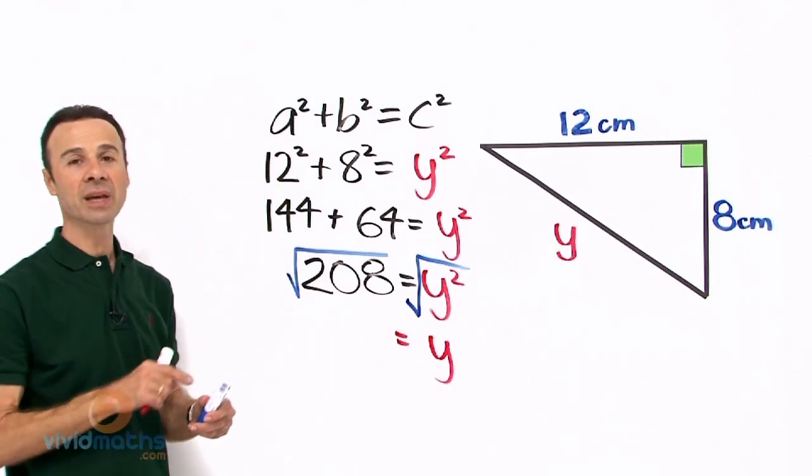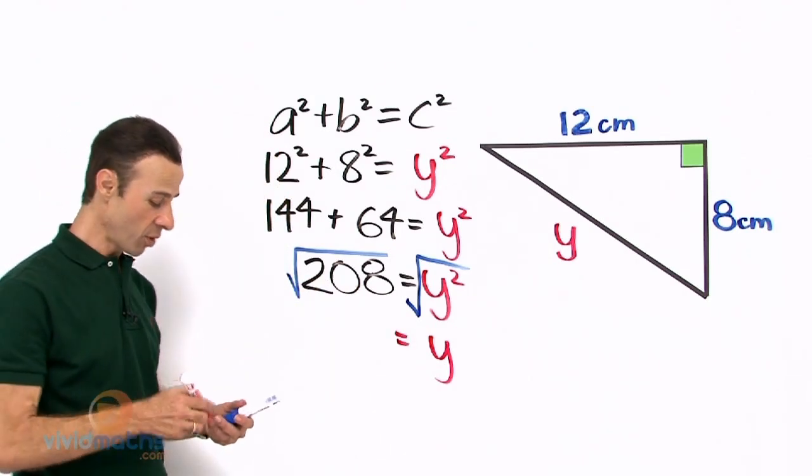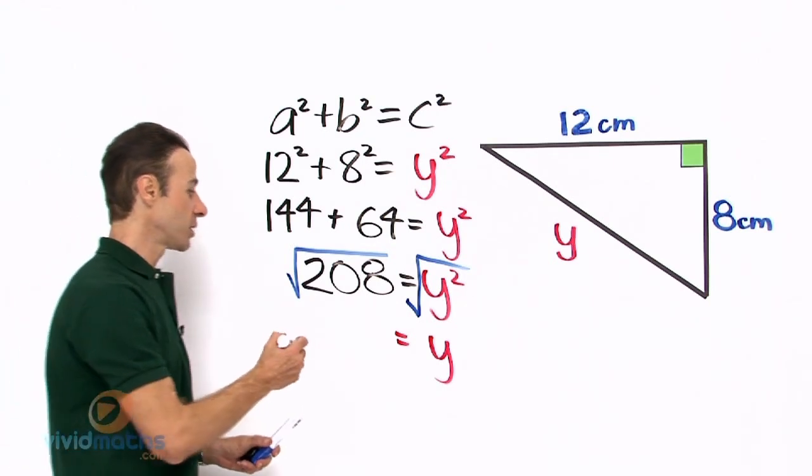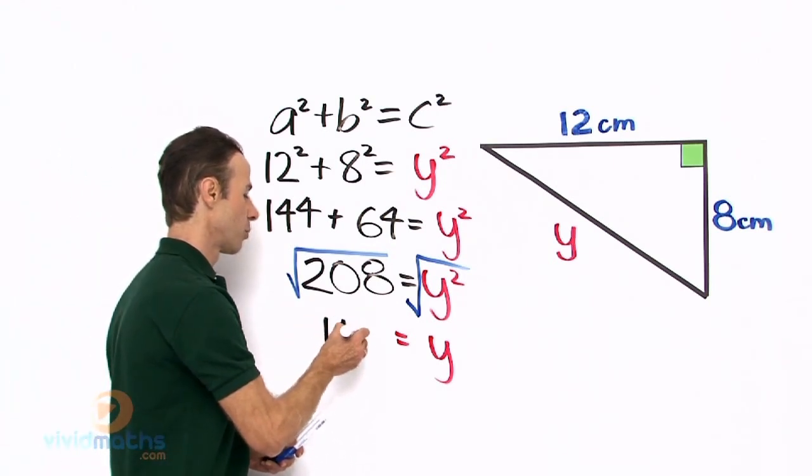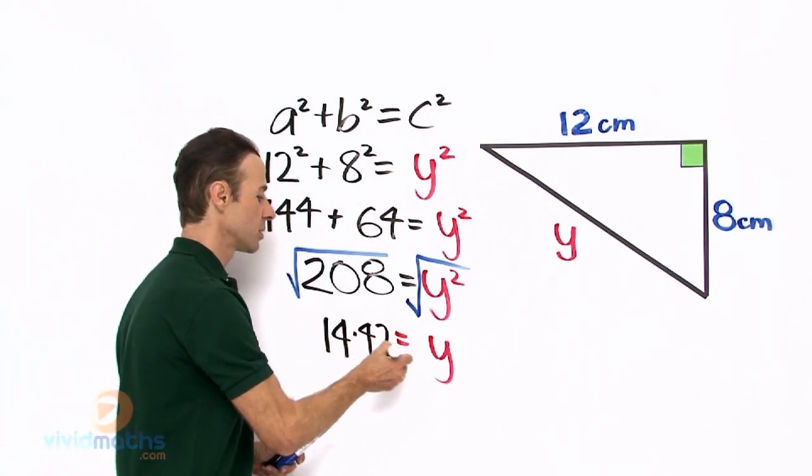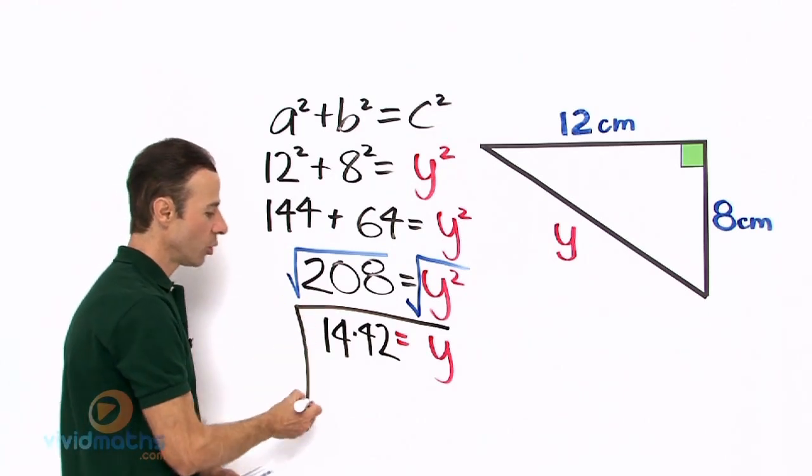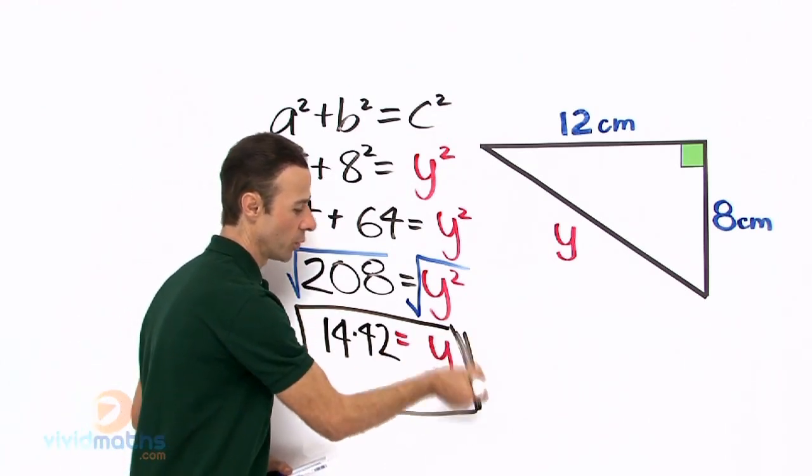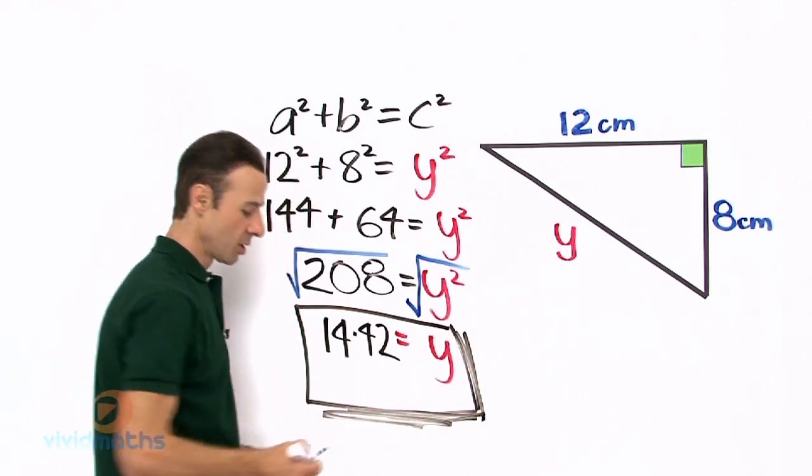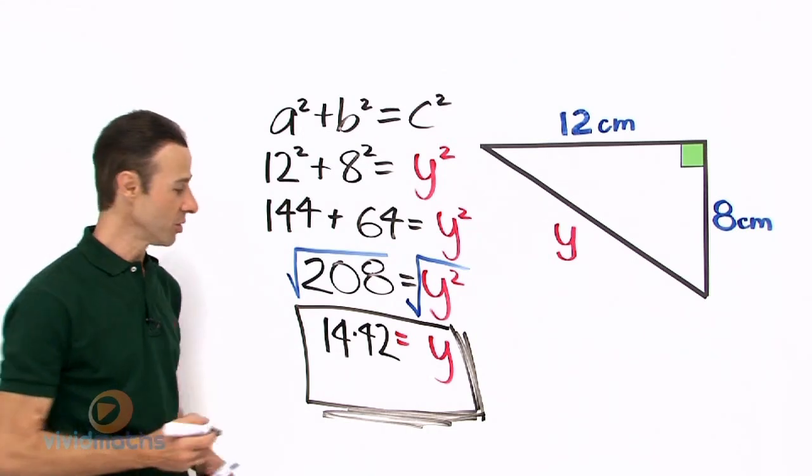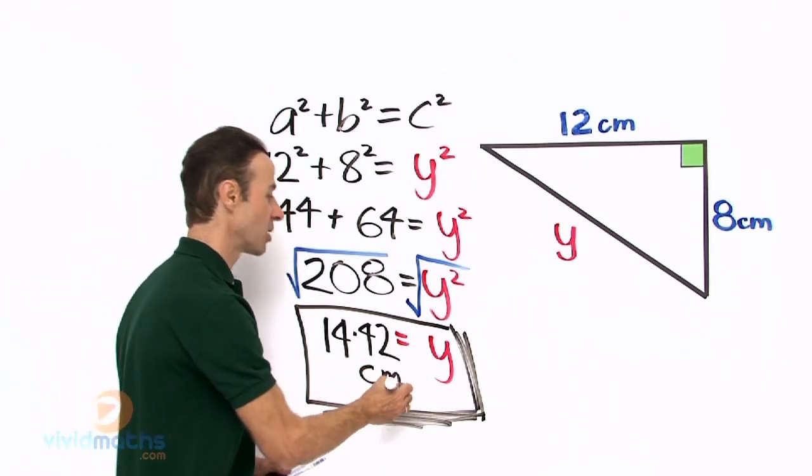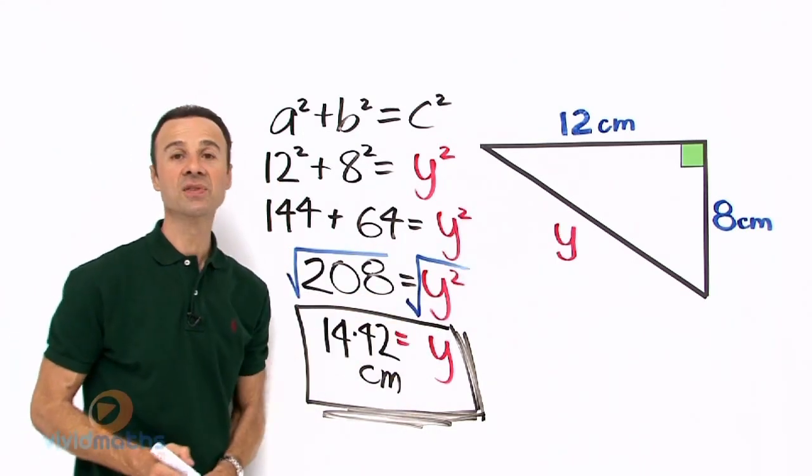So the square root of y squared simply becomes just y, and that equals the square root of 208. Put that in your calculator and you should get a number of 14.42. And always remember when you write your answer to always include the units, and that is centimeters. You will notice on the triangle we have centimeters there.